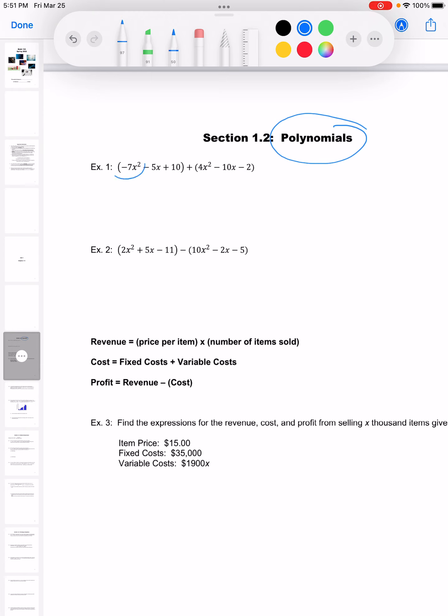So we've got a negative 7x plus a 4x, so negative 7 plus 4 is 3x squared. Then we've got a negative 5x minus 10x for negative 15x.